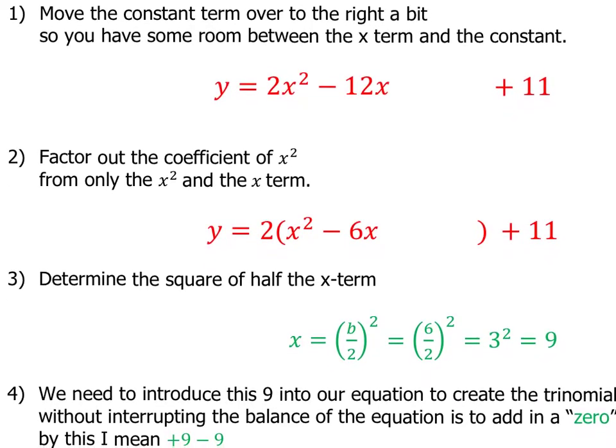After that, we determine the square of half of the x term. So you take the 6, divide it by 2 and square it. So that gives you 3 squared, which is 9. Now this is completing our square. This is our perfect square trinomial that we're trying to create here. So we're going to want to put this right there.